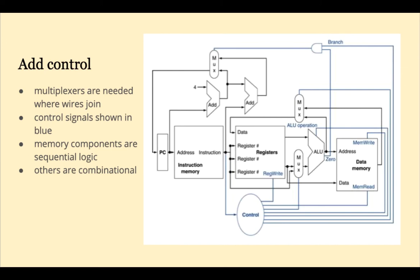Control signals are like traffic lights in a complicated city — they direct where and when data flows. Most of these blue lines are a single bit wide, so they're binary, one or zero. Other buses vary in length. Whenever two inputs join to become only one output, we need a multiplexer. For example, the PC could be updated by adding 4 as usual, or it could be updated to point to a branch target address. The blue selection line comes into the multiplexer to determine how the PC is updated. We'll go through these multiplexers in much more detail later.